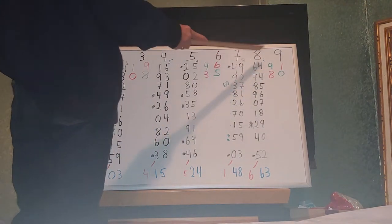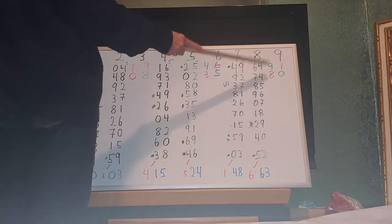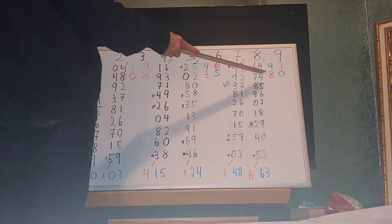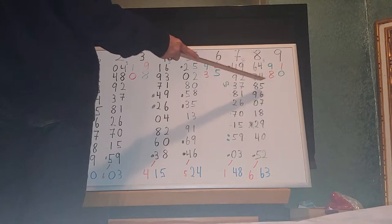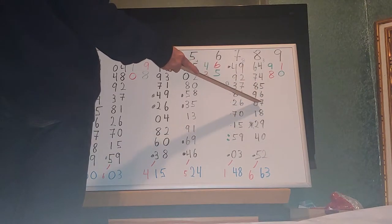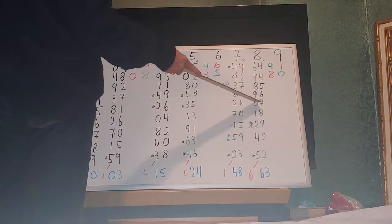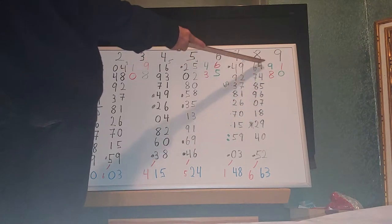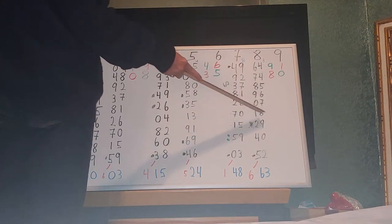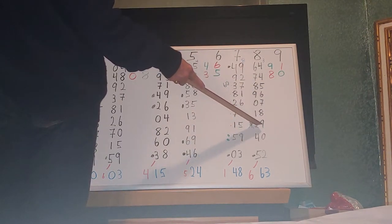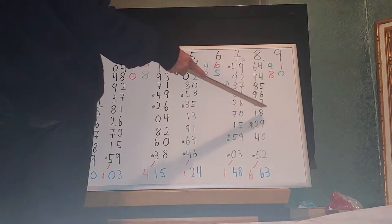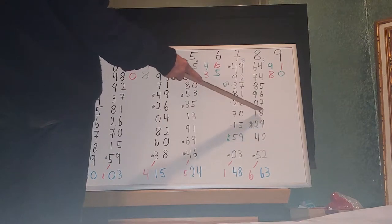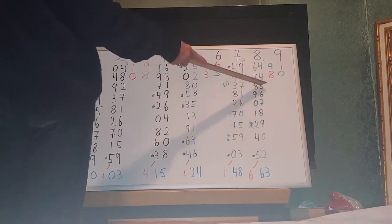8 squared is 64. 88 squared is 7,744. 888 squared is 7, 8, 8, 5, 4, 4. Then it goes 7, 8, 9, 9, 6, 5, 4, 4. Then 7, 9, 0, 1, 0, 7, 6, 5, 4, 4. Then 7, 9, 0, 1, 2, 9, 8, 7, 6, 5, 4, 4. Then 7, 9, 0, 1, 2, 1, 8, 7, 6, 5, 4, 4.